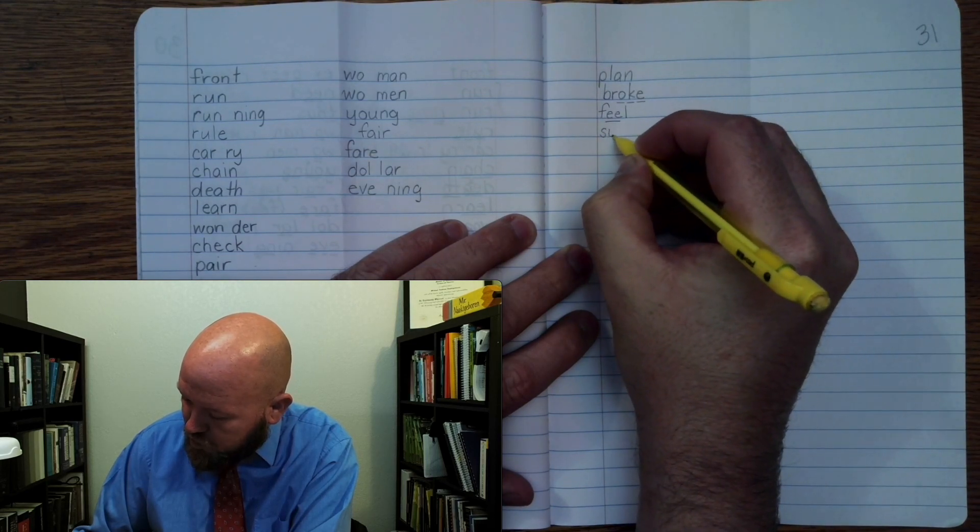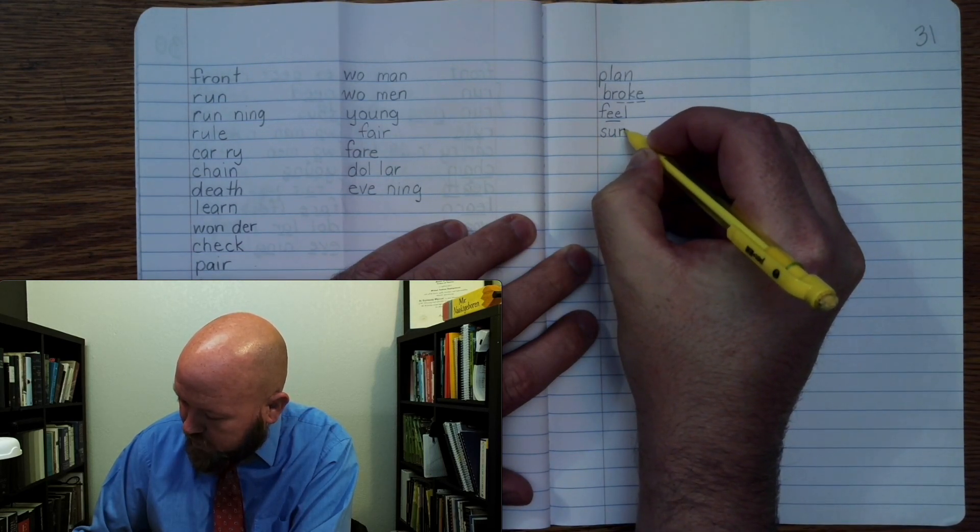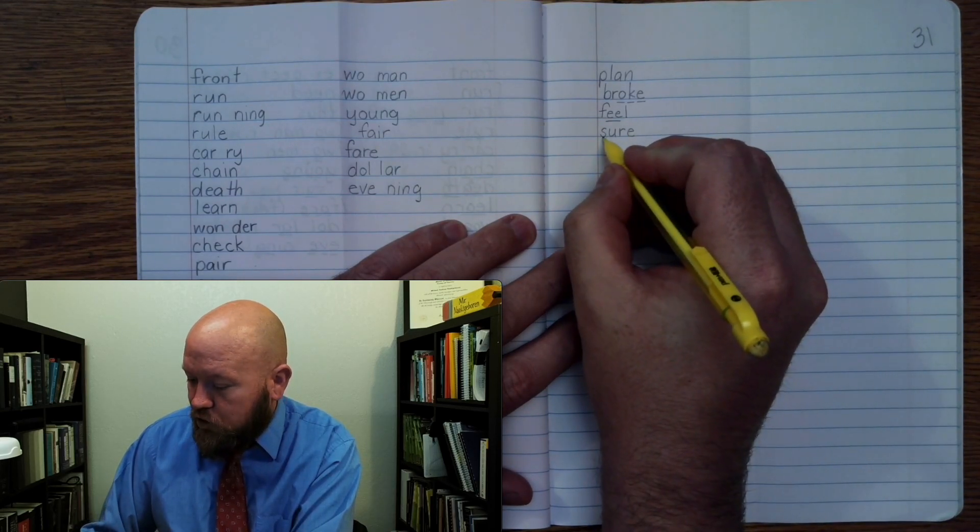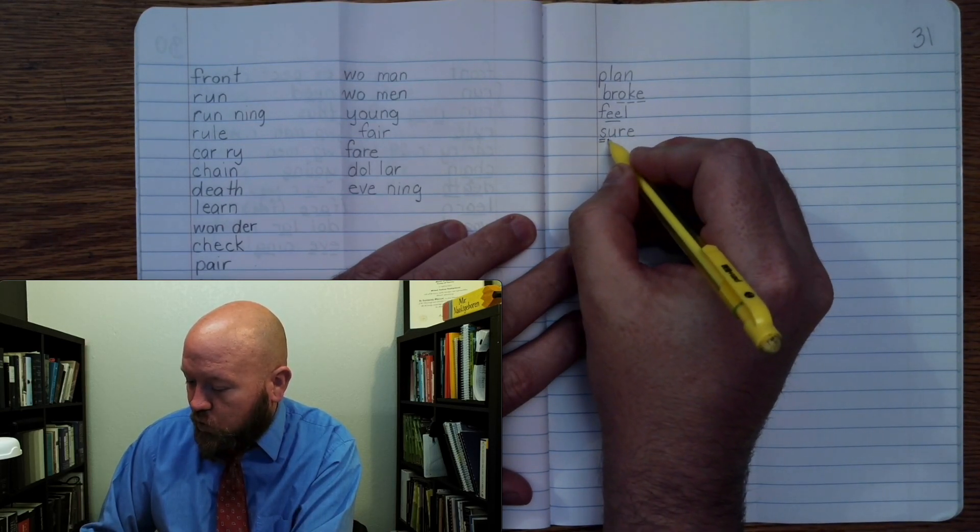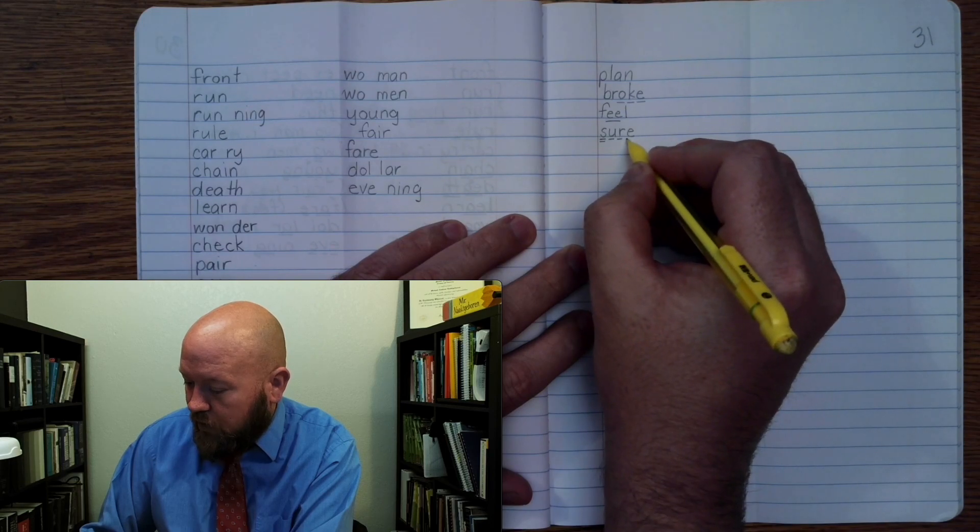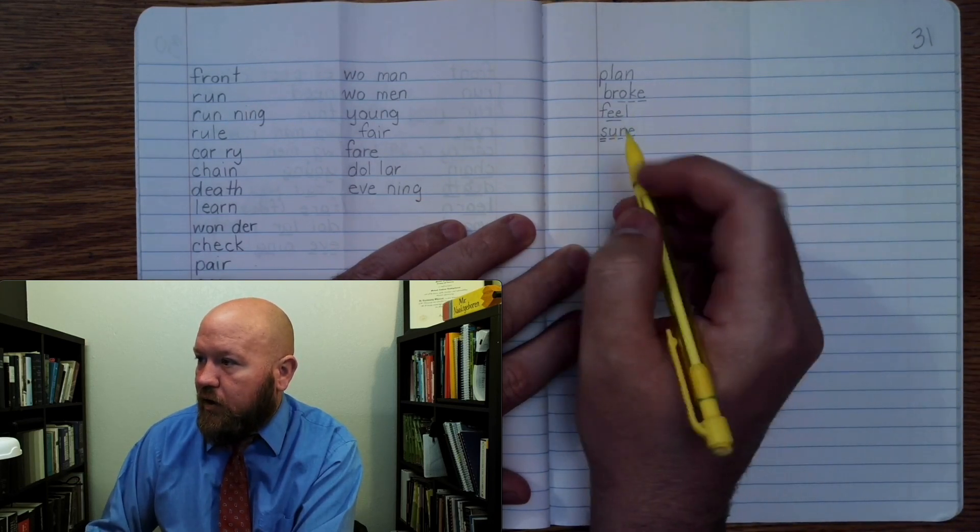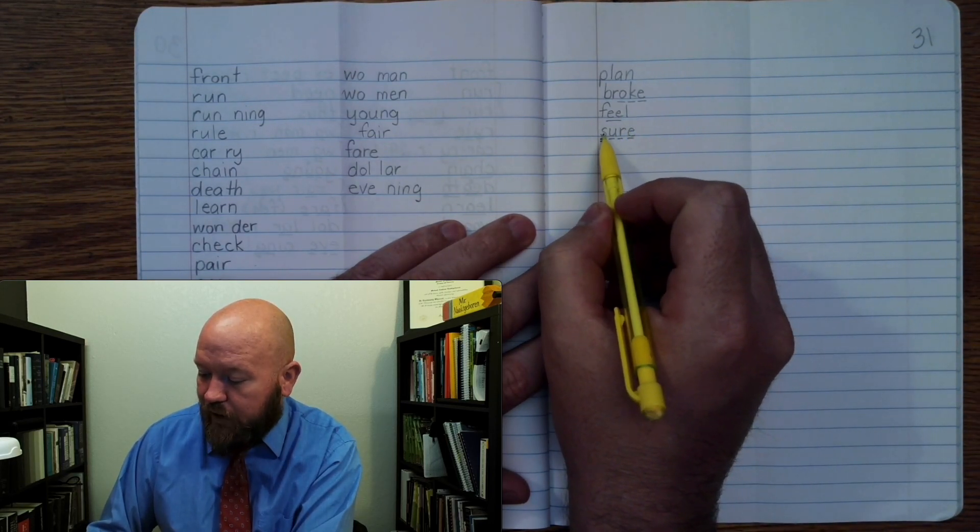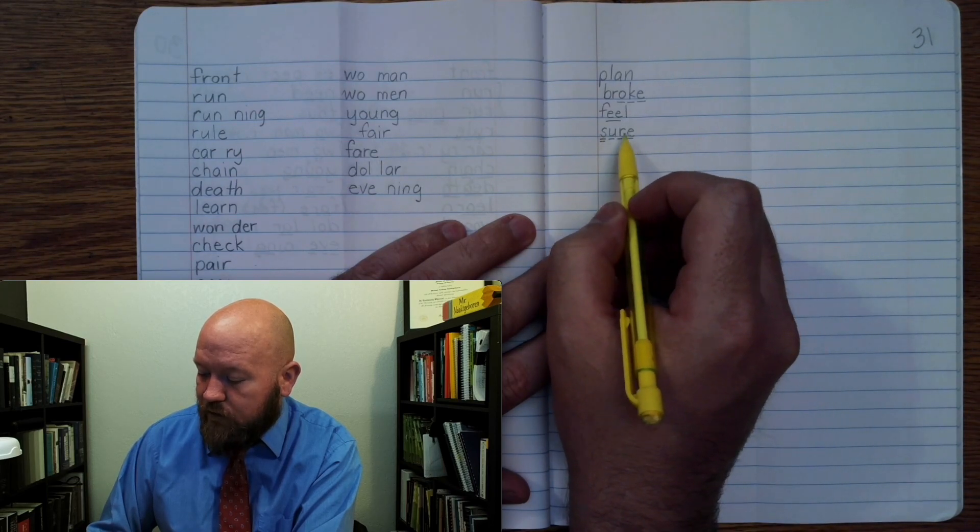Okay, write it. Shh, U, rr, ee. Markings. Shh twice, U once, rr once, E once. So, we double underline the S because it's making an S-H sound. And then, the E is allowing the U to say you.